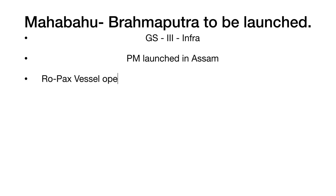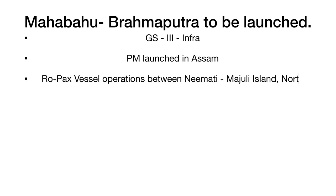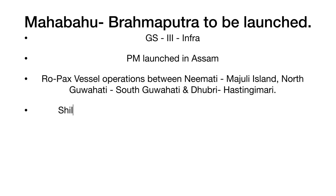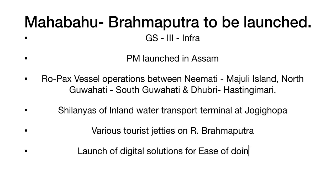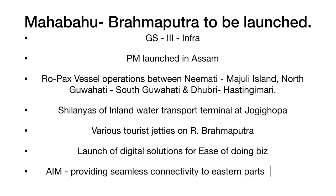The next headline: Mahabahu-Brahmaputra is to be launched — GS Paper 3, Infrastructure. This project is launched by Prime Minister Narendra Modi in Assam. RoPax vessel operations will begin between Neemati–Majuli Islands, North Guwahati–South Guwahati, and Dhubri–Hatsingimari. The project's foundation stone was laid at Jogighopa Terminal. Many tourist jetties will also be made available on the Brahmaputra. A launch of digital solutions for ease of doing business is also part of this project, with the aim to provide seamless connectivity to the eastern parts of India.